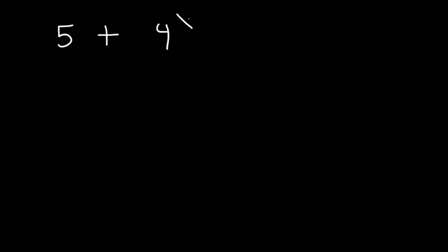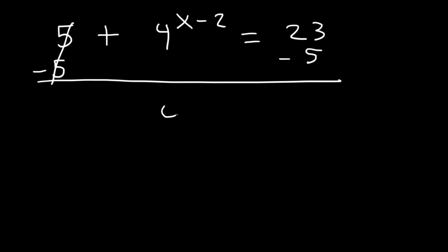Let's work on this example: 5 plus 4 raised to the x minus 2 equals 23. First, subtract both sides by 5 — we can't take the log yet. 23 minus 5 is 18. We can't convert 18 into a base 4 power (since 4 squared is 16 and 4 cubed would be 64), so we have to take the log of both sides.